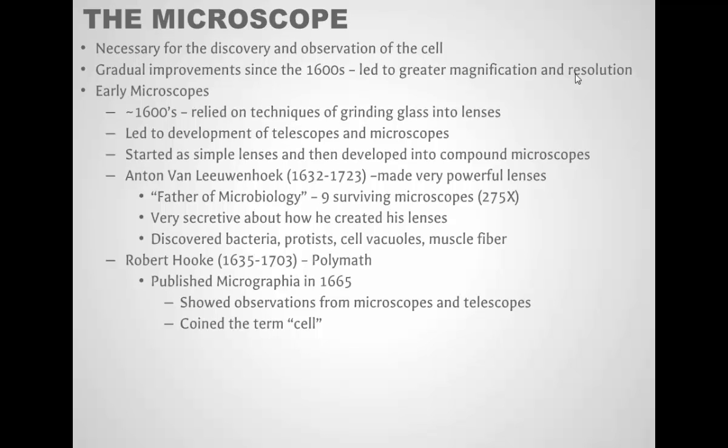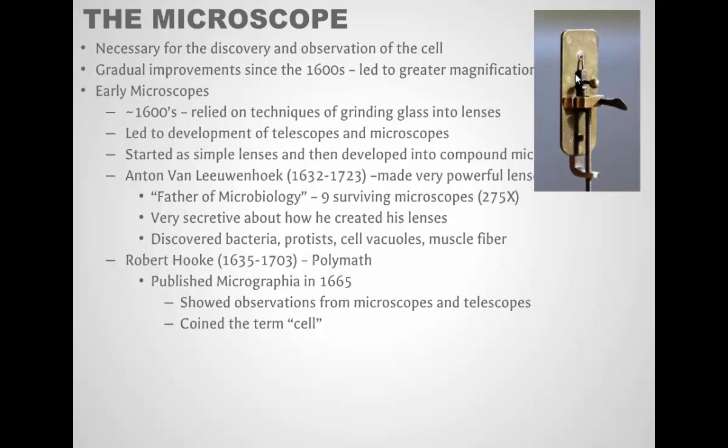He used his microscopes to look and find bacteria and discovered that there was microscopic life that people were not really aware of before the microscope. He saw protists as well. He identified some organelles within cells, things like a vacuole, and looked at muscle tissue as well. So Leeuwenhoek is one of the first people to really perfect the microscopes.